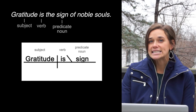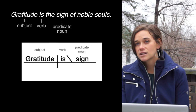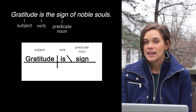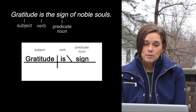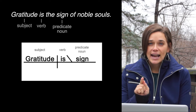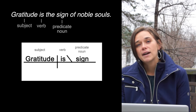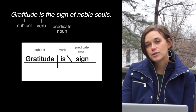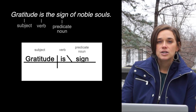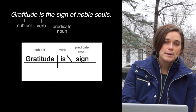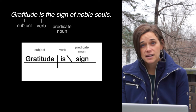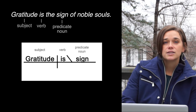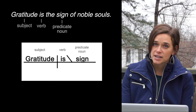To diagram it, we extend the horizontal line and we place it right after the verb. Then we put a little angled line between the verb and the predicate noun. And the slant or the angle should point back to the subject because the predicate noun is going back to rename the subject.